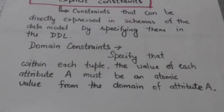Domain constraints are schema-based constraints of the relational model. Domain constraints specify that within each table, the value of each attribute A must be an atomic value from the domain of attribute A.